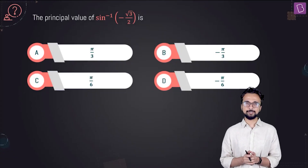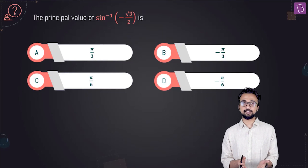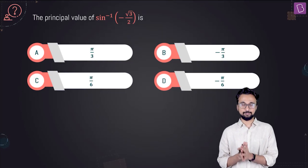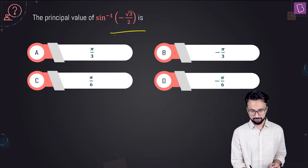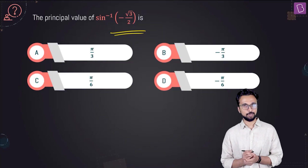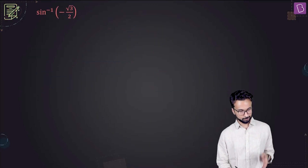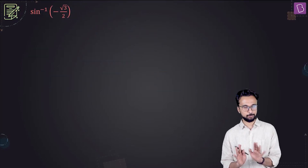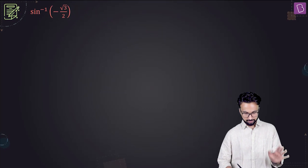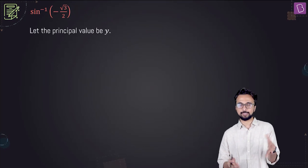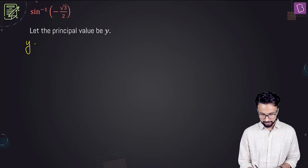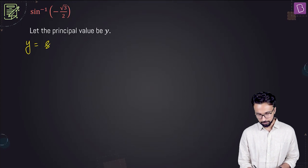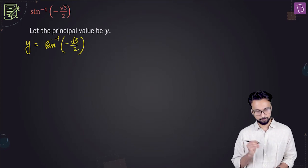Look at this question: sine inverse of minus root 3 by 2 is given to us, and we need to find its principal value. We will take the principal value to be some variable y, so y equals sine inverse of minus root 3 by 2.